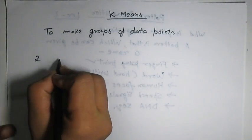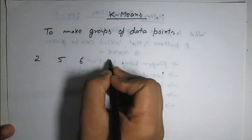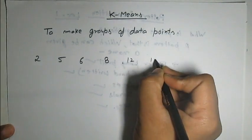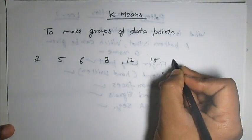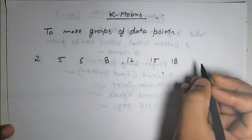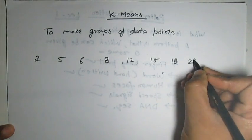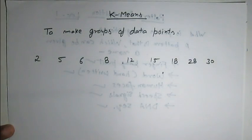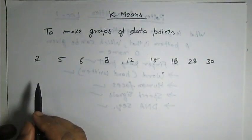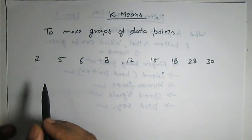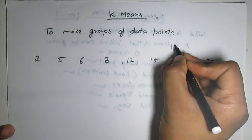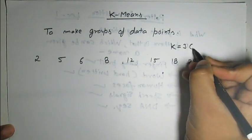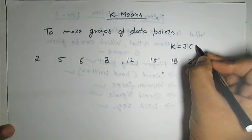For example the data points are 2, 5, 6, 8, 12, 15, 18, 28, and 30. Suppose we want to divide these points into 3 clusters. In this case the value of K is equal to 3 — this is the number of clusters.